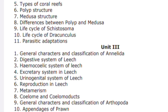From unit number two, there are 17 questions in total and you need to learn all of them. The respiratory system of prawn and the digestive system of prawn are two particularly important questions. You need to write detailed information about the respiratory and digestive systems of the prawn. These are things you will learn in zoology.